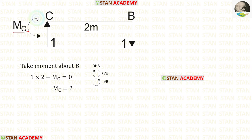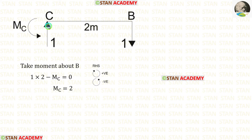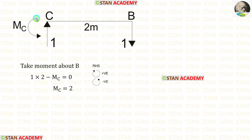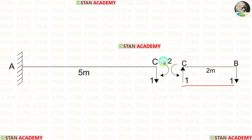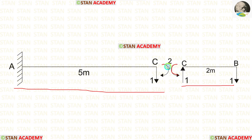Now we have to find MC. Let us assume that MC is acting in the anti-clockwise direction. To find out MC, let us take moment about B. When we take moment on the right-hand side, clockwise will be positive and anti-clockwise will be negative. The unit load is acting towards point B in the clockwise direction, so it will be positive and the distance is 2, so 1 into 2. MC is acting in the anti-clockwise direction, so it will be negative. Finally, for MC we got a positive value — that means our assumption is correct. MC is acting in the anti-clockwise direction for CB, so for AC it should be acting in the clockwise direction.